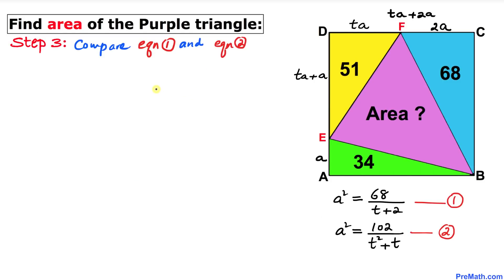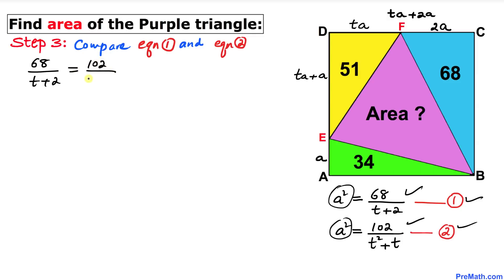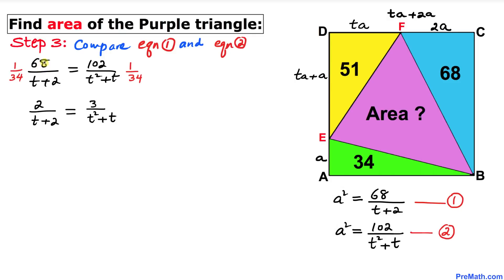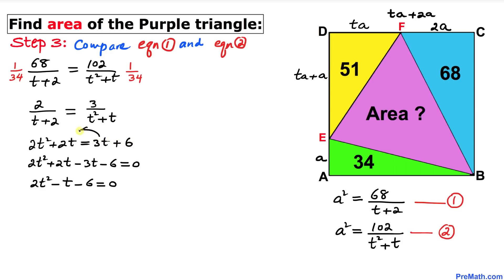Comparing Equation 1 and Equation 2, since both equal a squared, we set them equal: 68 divided by (t + 2) equals 102 divided by (t² + t). Reducing by multiplying both sides by one-half of 34, we get 2 over (t + 2) equals 3 over (t² + t). Cross-multiplying gives 2t² + 2t equals 3t + 6.